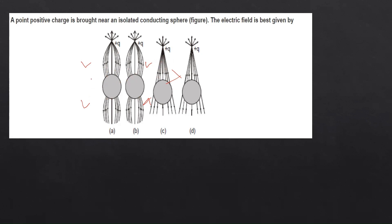Looking at the remaining two diagrams, we apply the concept of induced charges. A positive charge is brought near, so a negative charge is induced on the near side of the sphere, and a positive charge is generated on the far side. Since electric field lines travel from positive to negative, we check each diagram: one goes positive to negative correctly, the other is inverted toward the positive charge, so that diagram is neglected.